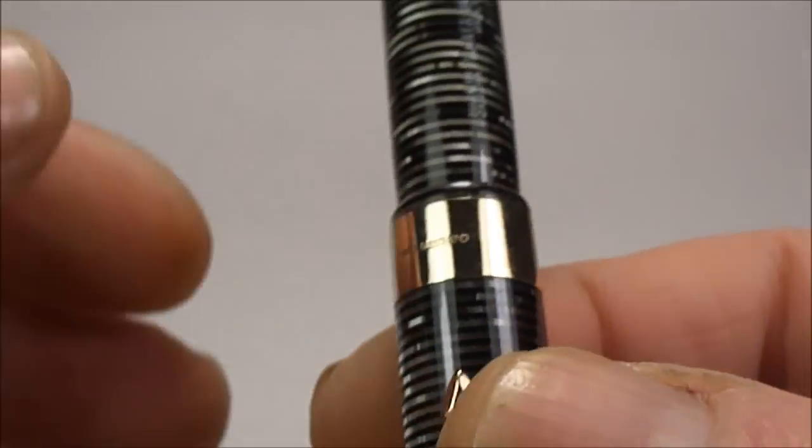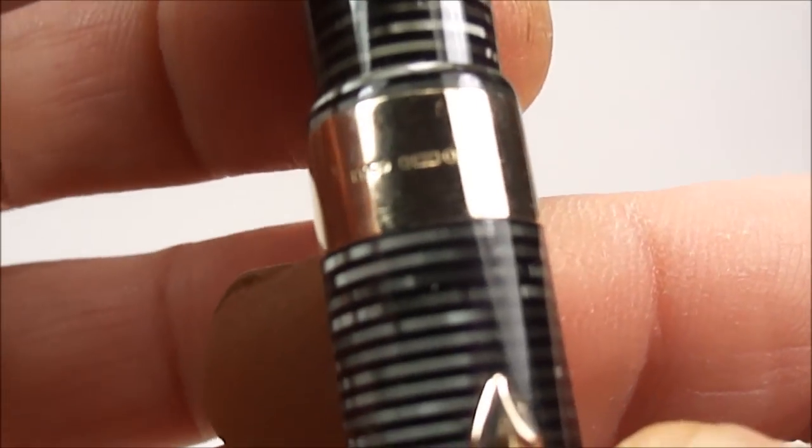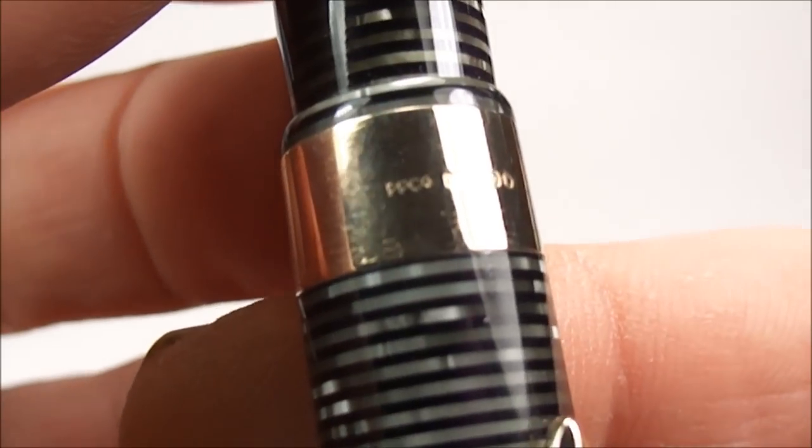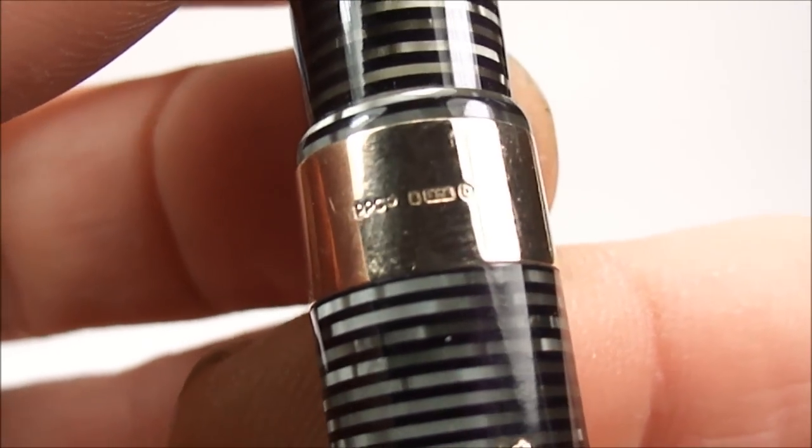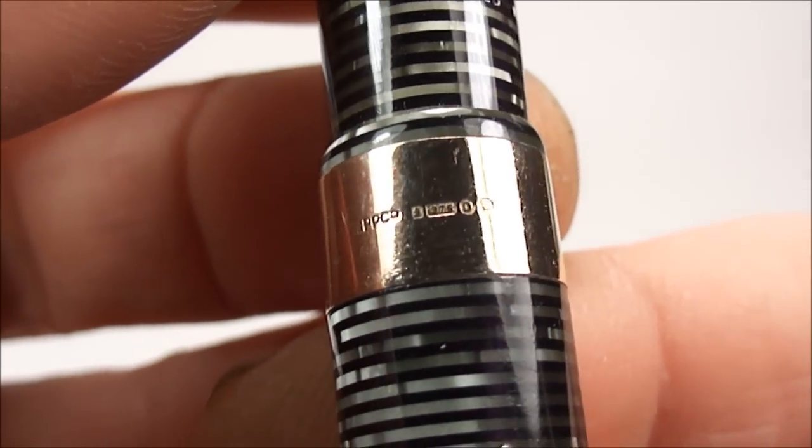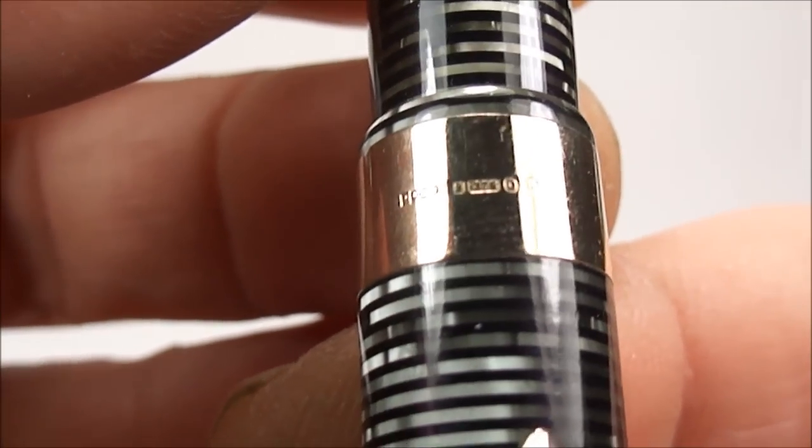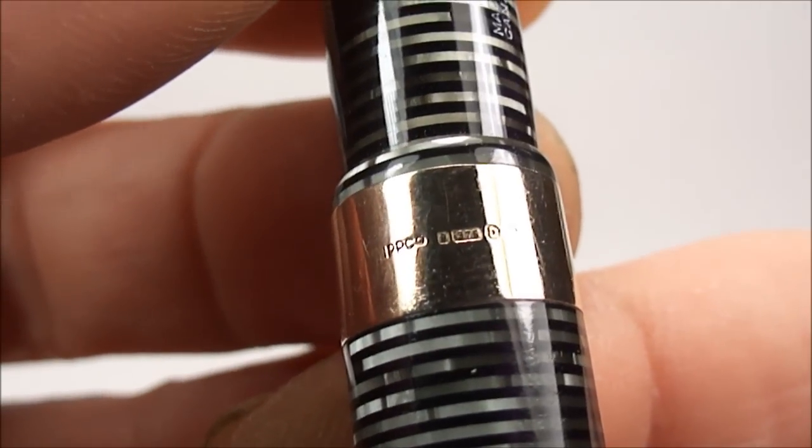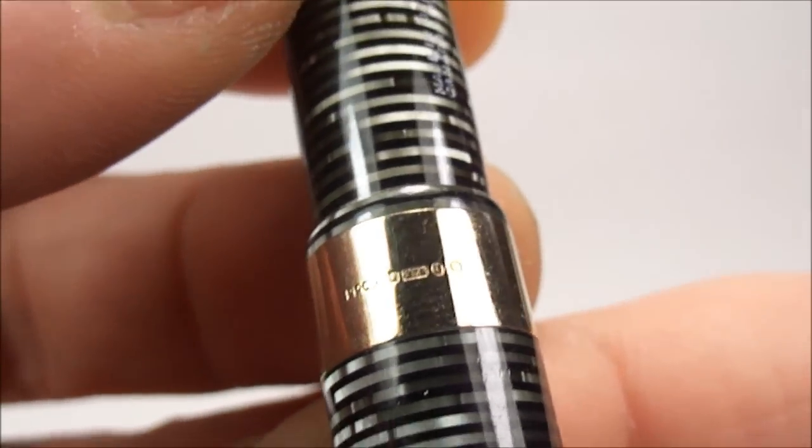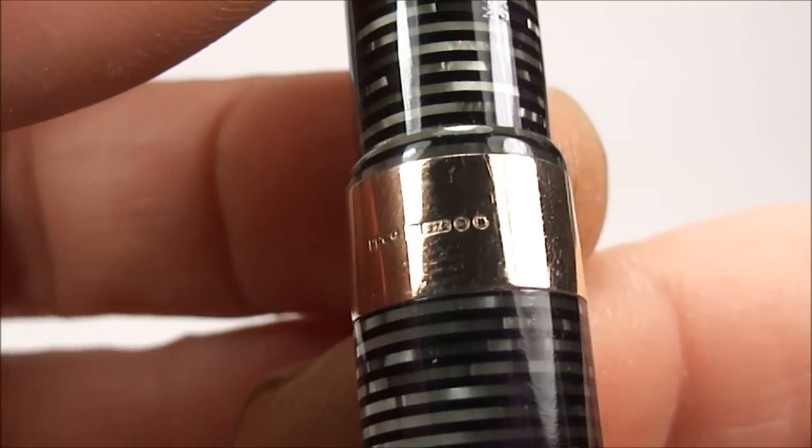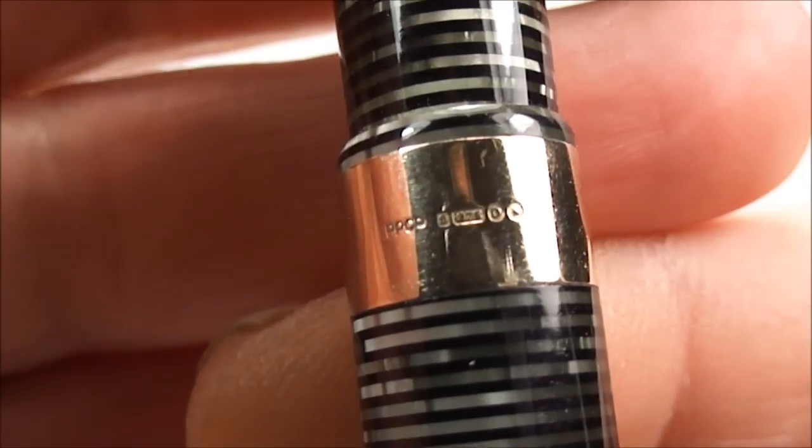Now the strange thing on this particular one, the imprints or the stamps are actually upside down. But what you'll actually see there, it's telling us it's from the Parker Pen Company, it's also telling us it was made in London, it's telling us it's nine carat gold as we've mentioned. And last but not least, it actually has the date letter, which I believe on this one is a D, which corresponds to the date on the barrel itself. So the D actually corresponds to the 1939. So that's what we term as the jeweller's band.